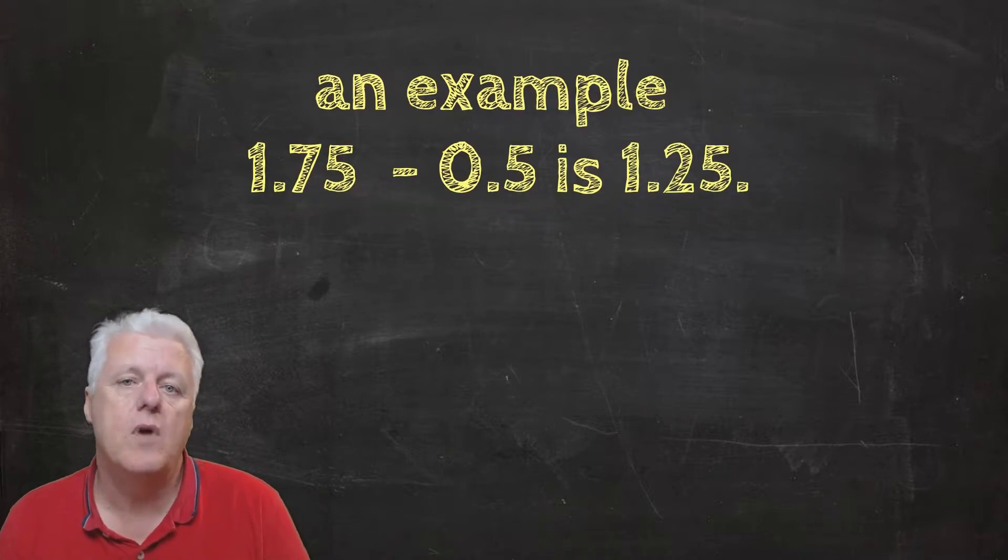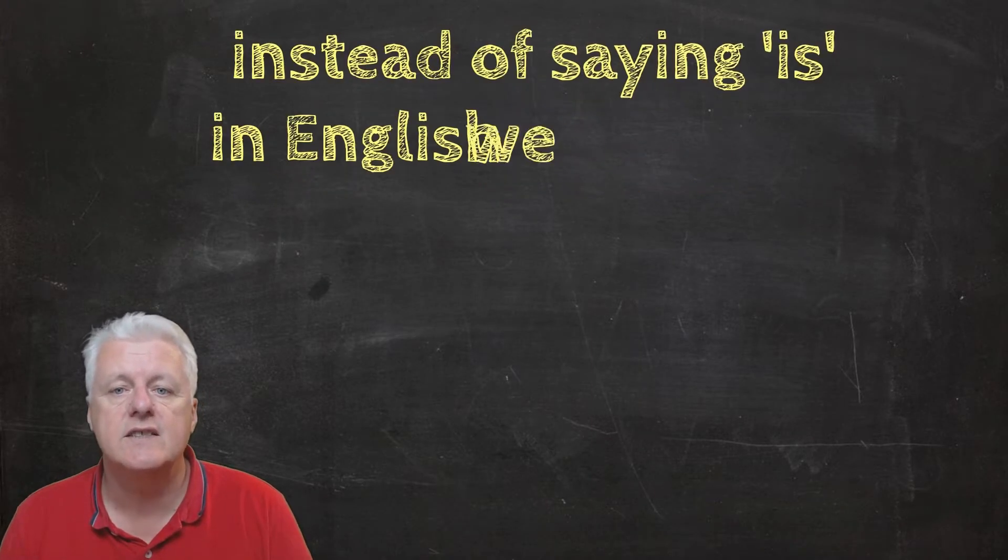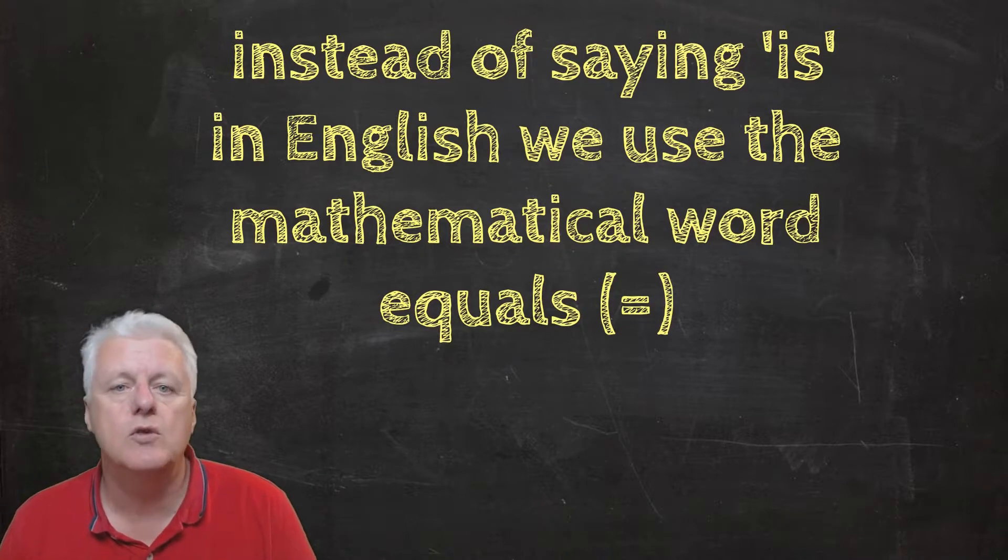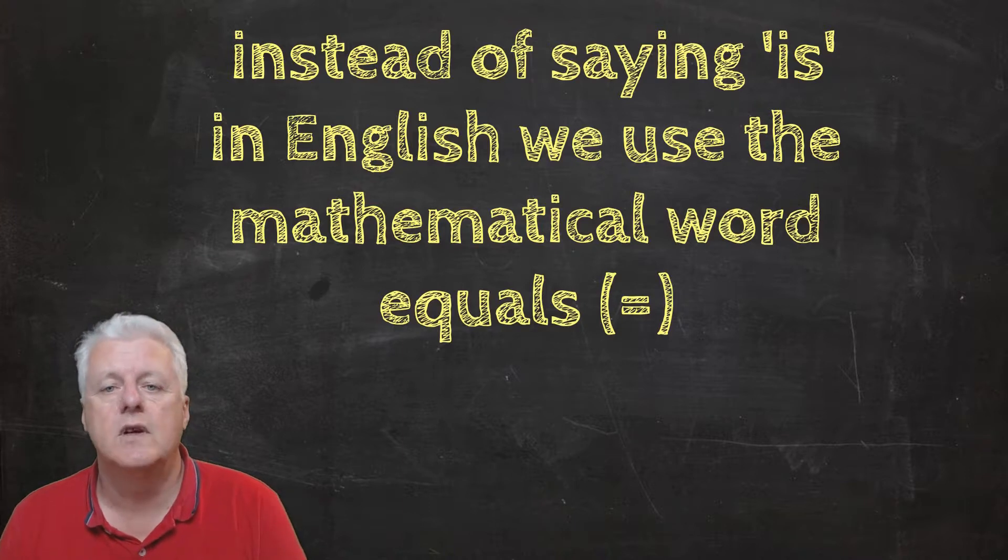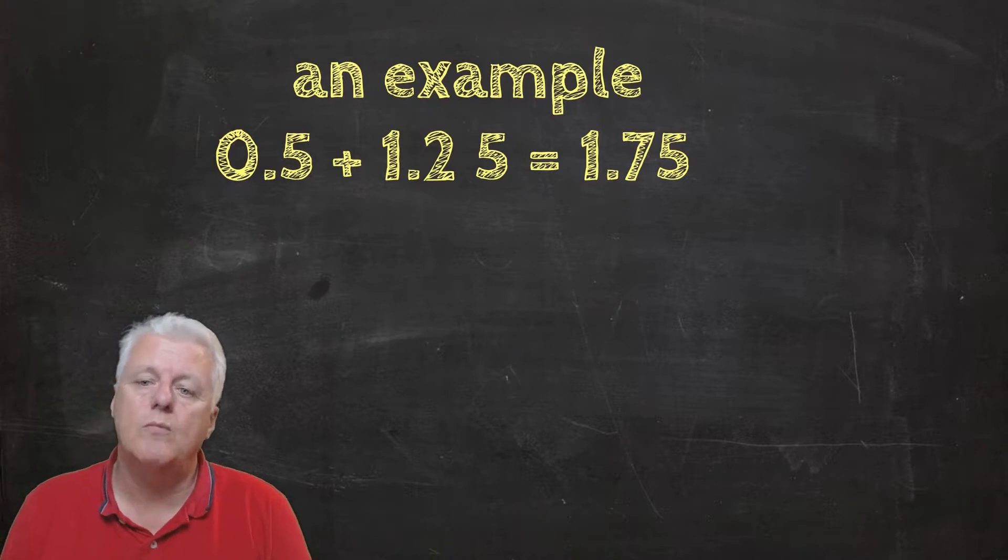Now instead of saying 'is' in English, we use the mathematical word 'equals,' and the two bar lines are the symbol for equals. An example: 0.5 plus 1.25 equals 1.75, and also 1.75 minus 0.5 equals 1.25.